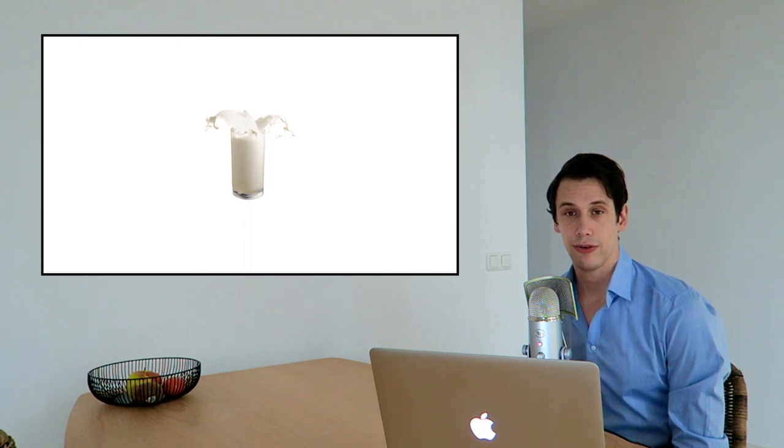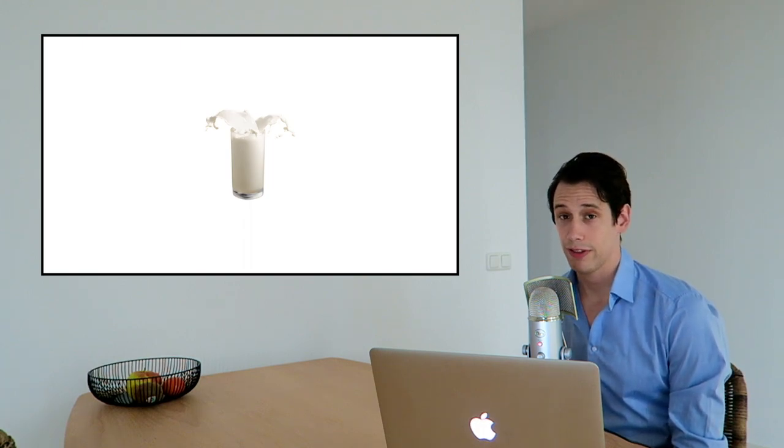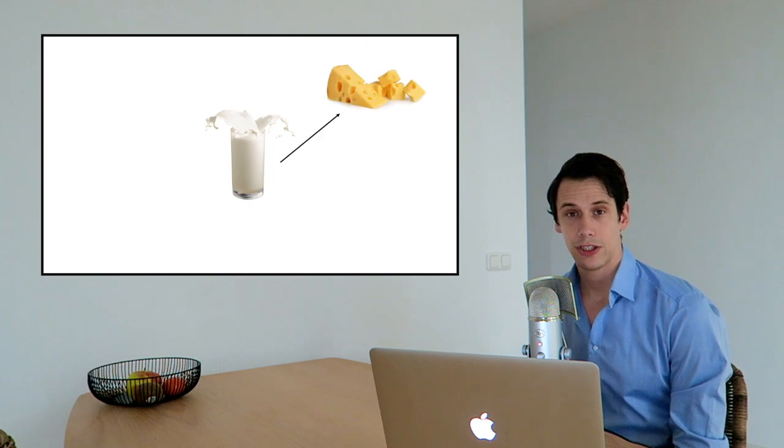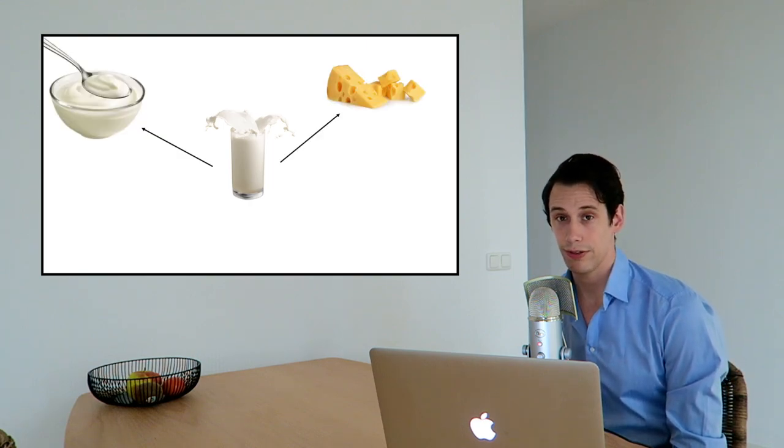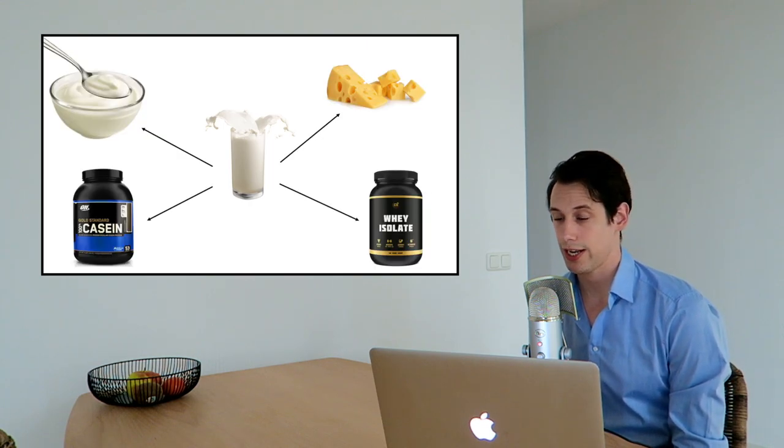For example, milk can be processed into milks with different types of fat content, cheese, yogurt, different protein products and many more. And it's not hard to imagine that the digestion and absorption rate of these different products differ even though they're all made from the same starting ingredient, milk.